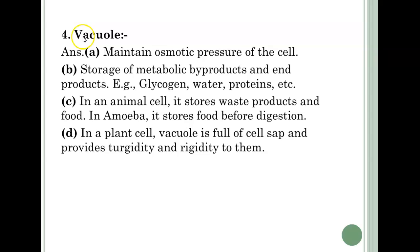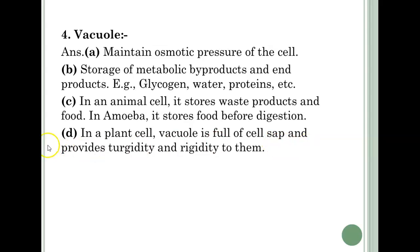Fourth question — Vacuole. Answer A: It maintains osmotic pressure of the cell. B: Storage of metabolic by-products and end products, for example glycogen, water, proteins, etc. C: In an animal cell, it stores waste products and food. In amoeba, it stores food before digestion. D: In a plant cell, the vacuole is full of cell sap and provides turgidity and rigidity to them.